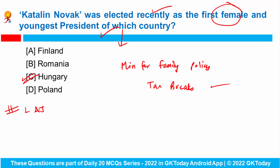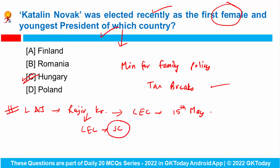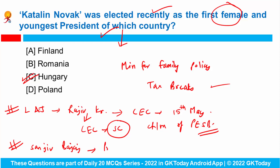The Union Ministry of Law and Justice has announced that Mr. Rajiv Kumar, the current Election Commissioner, will take over as the next Chief Election Commissioner from 15th of May. He has been appointed by the President of India and will take charge from Chief Election Commissioner Sushil Chandra, who is due to retire soon. Rajiv Kumar had also served as the Chairman of Public Enterprises Selection Board. Also, Mr. Sanjeev Bajaj has been appointed as the President of Confederation of Indian Industry, that is CII.